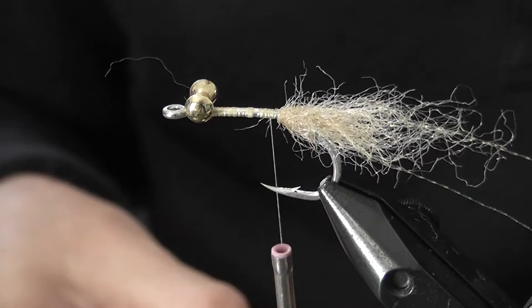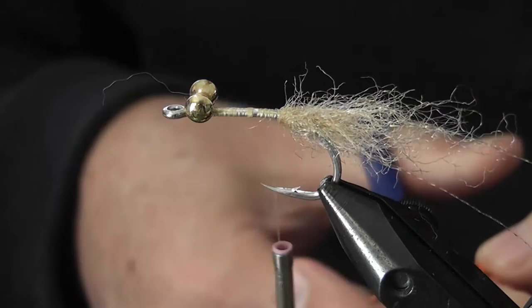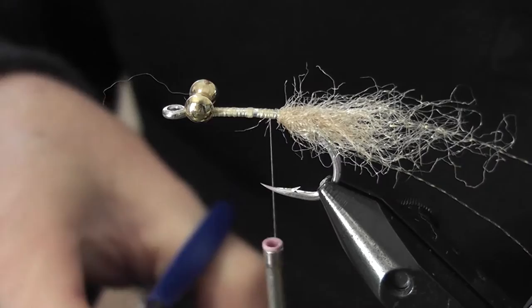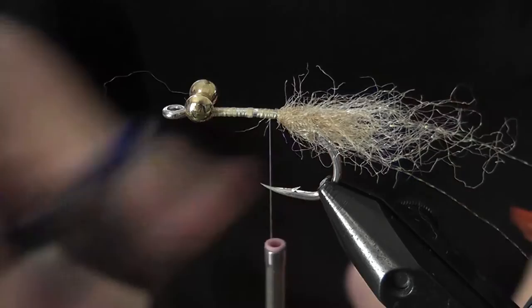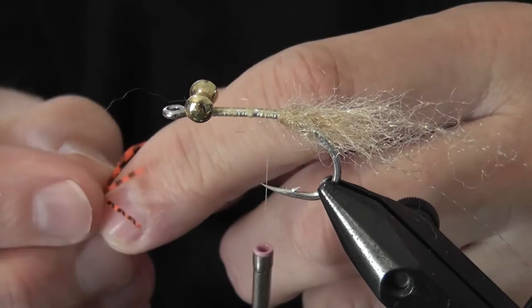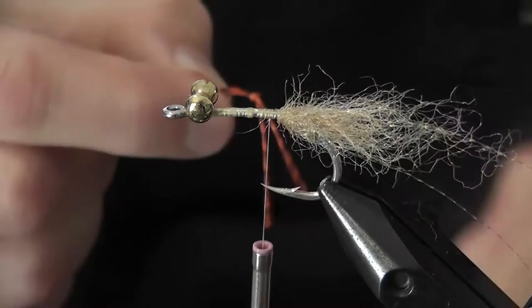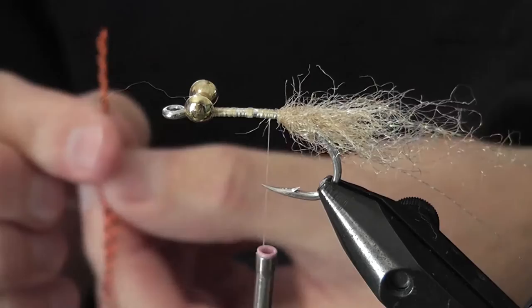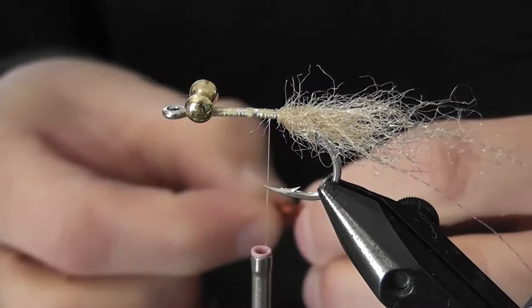So the next step is to tie in the silicon legs. We're just going to take two silicon legs, so one pair off the piece. First thing I'm going to do is actually knot the ends. So I'm taking it and I'm just going to quickly do a blood knot there. And then same for the other end. Don't worry about how even they are because I'm going to trim them anyway once I've tied them in.